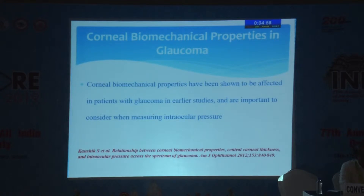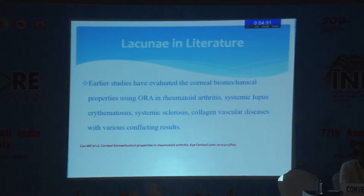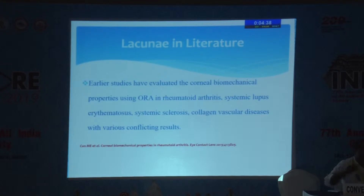Corneal biomechanical properties have been shown to be affected in patients with glaucoma in earlier studies and are important to consider when measuring intraocular pressure. Earlier studies have evaluated corneal biomechanical properties using ORA in rheumatoid arthritis, systemic lupus erythematosus, systemic sclerosis, and collagen vascular diseases, with various conflicting results.